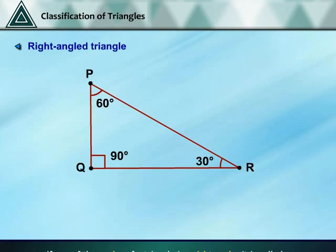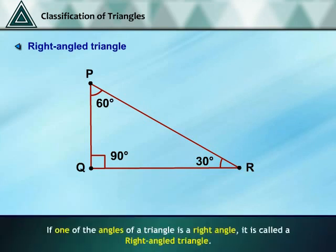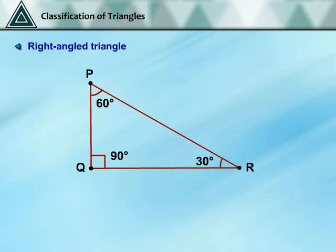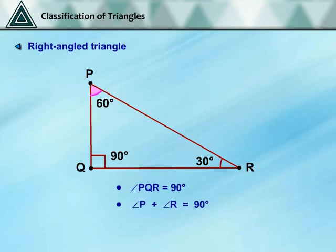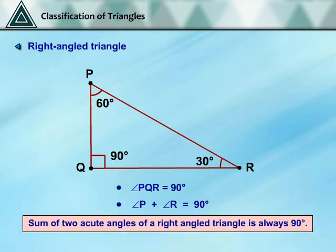Right Angle Triangle: if one of the angles of a triangle is a right angle, it is called a Right Angle Triangle. The given figure shows a Right Angle Triangle PQR as Angle PQR is equal to 90 degrees. Also, Angle P plus Angle PQR equals 90 degrees — that is, the sum of the two acute angles of a right angled triangle is always 90 degrees.